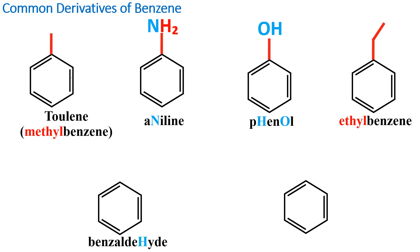The next one is called benzaldehyde. You see I've bolded the letter H. Benzaldehyde and the previous one look very similar, but there's one slight difference. In benzaldehyde, the H is capitalized and bolded — that's to help remind you that this benzene ring is attached to a carbon-oxygen double bond, and the other end is attached to a hydrogen. H for hydrogen.